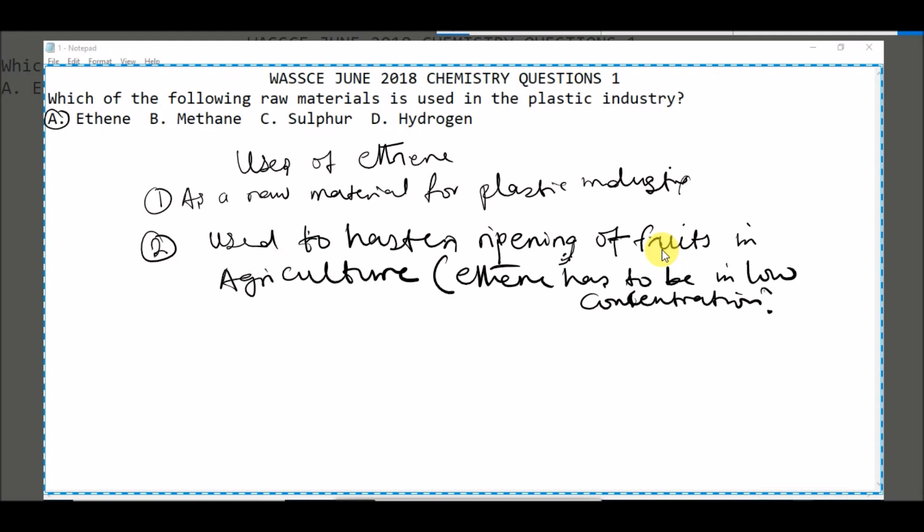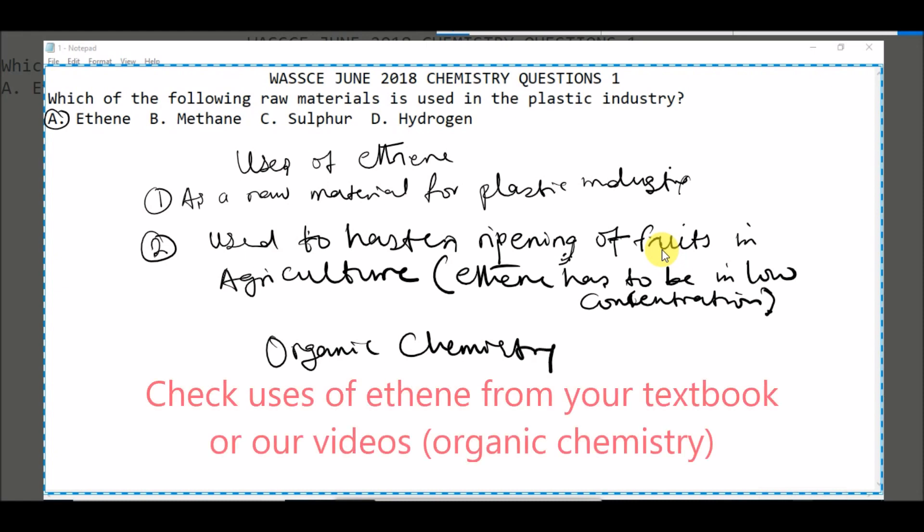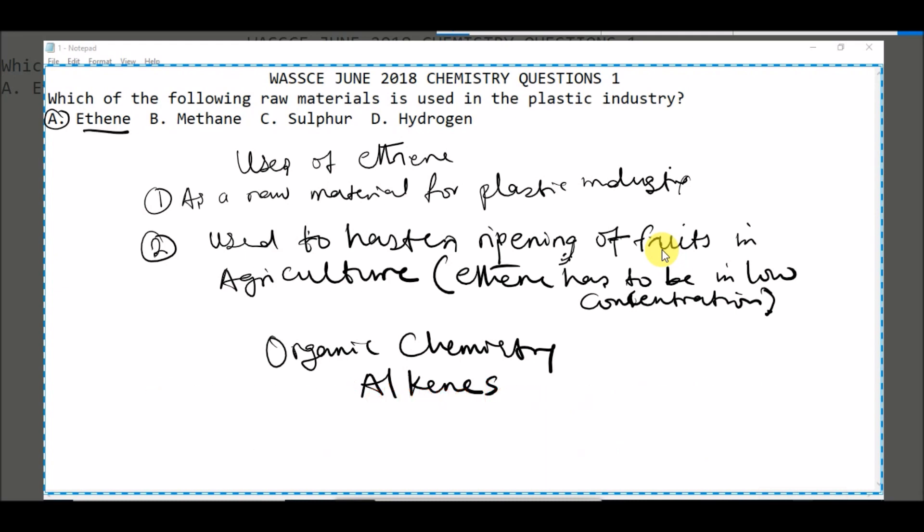So you can actually find this very topic in organic chemistry. If you check organic chemistry under ethene or under alkenes, ethene is one of the alkenes. So if you check alkenes and check uses of ethene, you're going to see this as one of the uses. So take note.